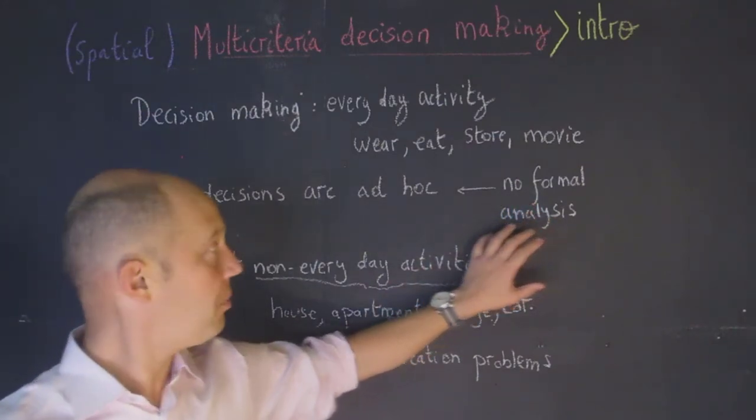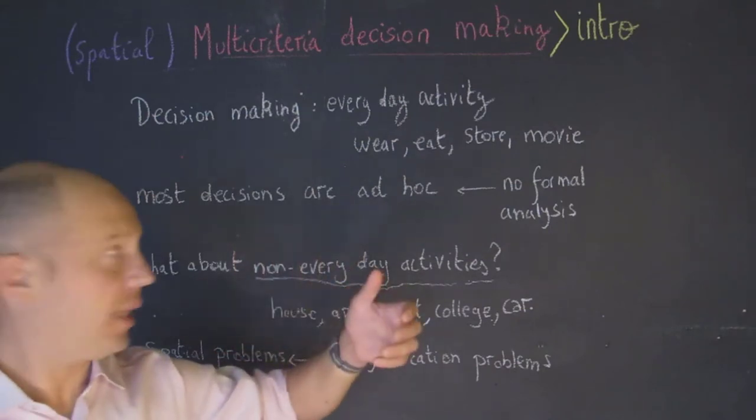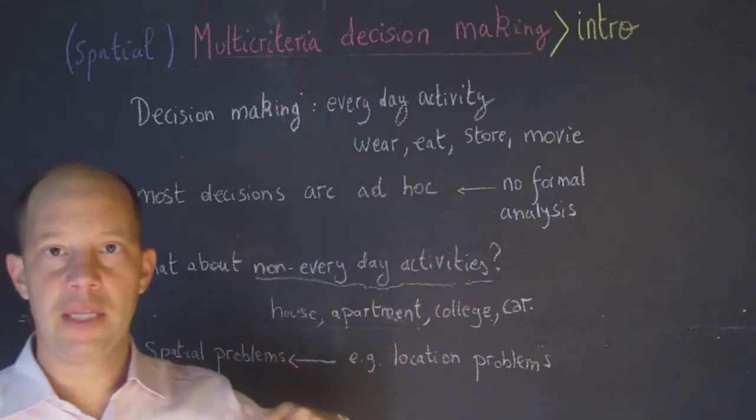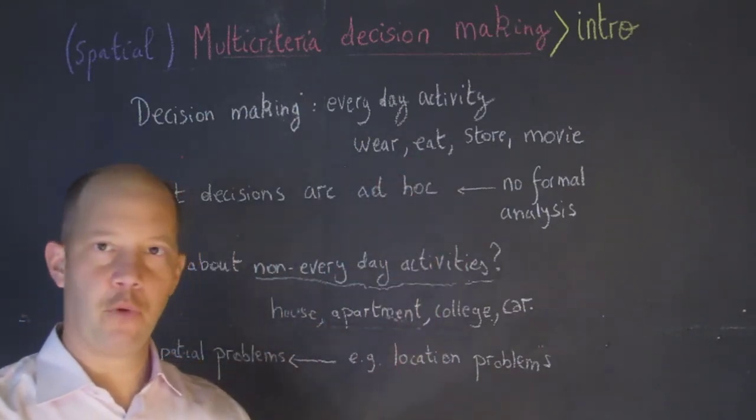Generally those decisions that we make do not have any formal analysis, or at least do not require a lot of thinking. When we decide what to eat, we might see what type of food we have in the pantry.